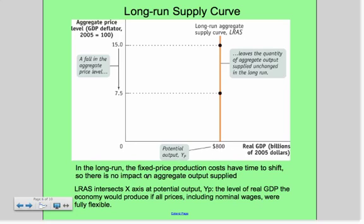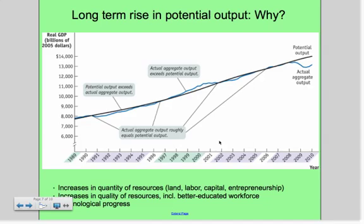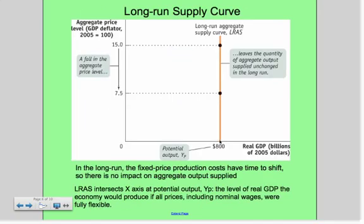Importantly, the long run aggregate supply intersects the x-axis at the potential output. Potential output is the level of real GDP the economy would produce if all prices, including nominal wages, were fully flexible.